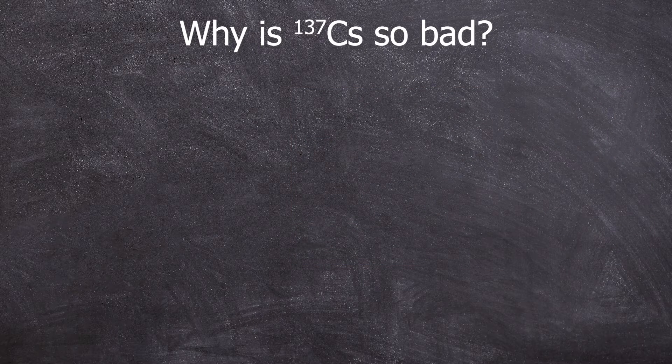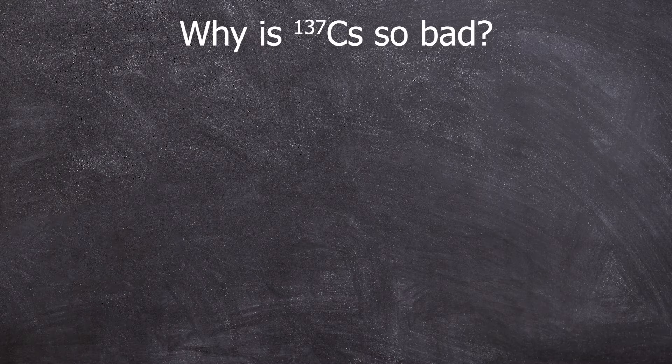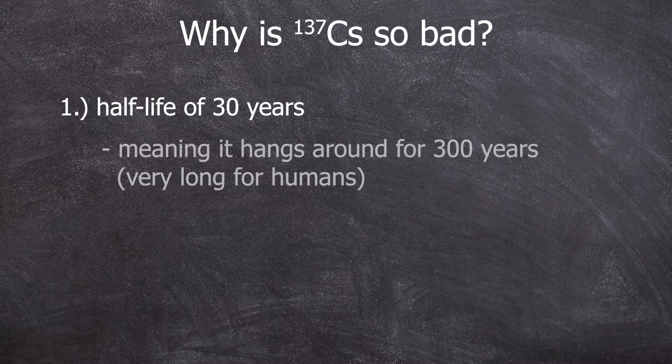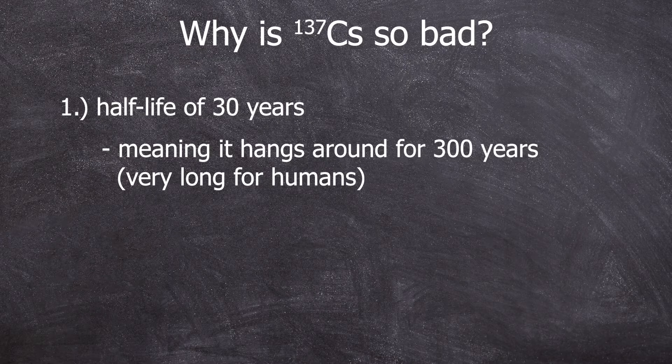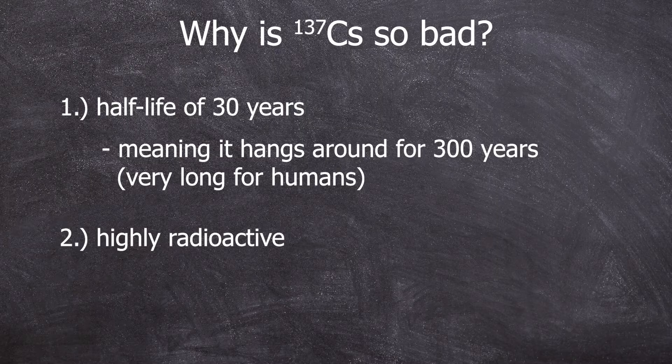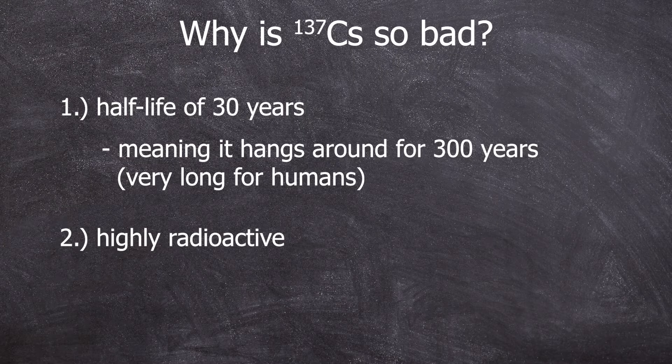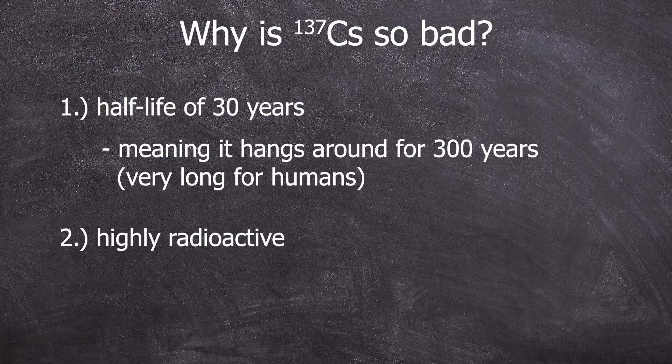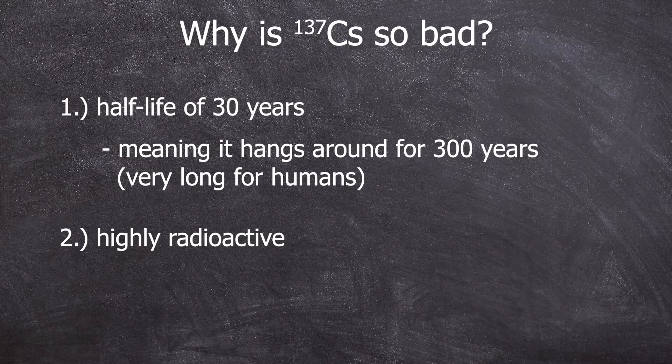Cesium-137 is a problematic substance for several reasons. Its 30-year long half-life means that it stays for at least 300 years, which is an extremely long time for humans. Yet 30 years is still short enough for even small amounts to be highly radioactive and have severe biological consequences due to the radiation exposure.